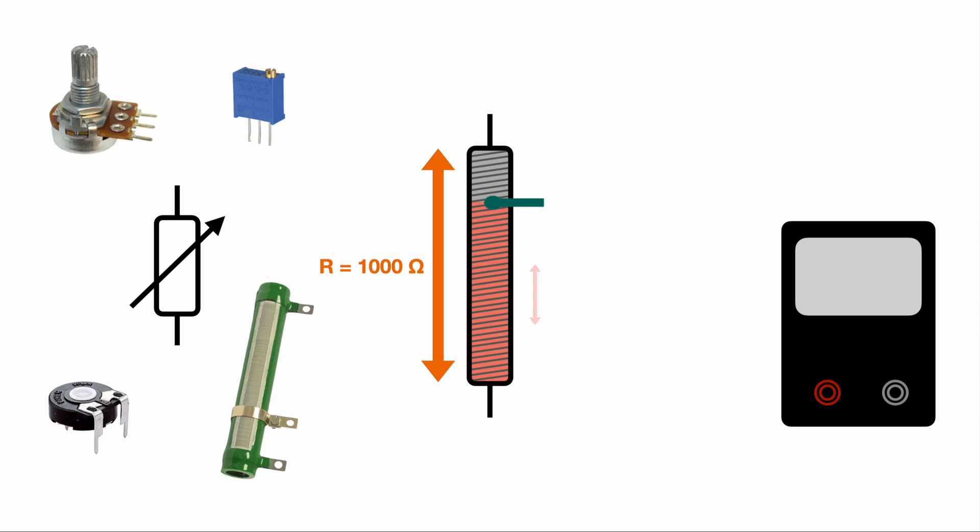So looking at the red area again, this one would represent now roughly 80% of the whole potentiometer. So if you measure again between the slider and the bottom connector, we would measure around 800 Ohm.